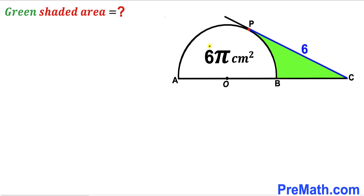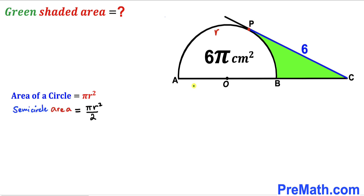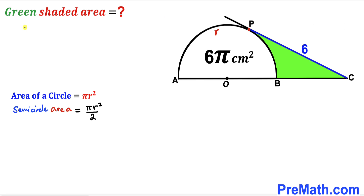Let's get started. Let's assume the radius of this semicircle is r. Recalling the area of a circle formula, area equals πr². Since we are dealing with a semicircle, the area formula is πr²/2. The area of this semicircle has been given as 6π, so we can write πr²/2 = 6π.